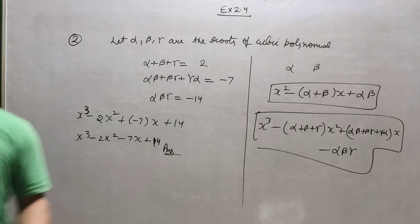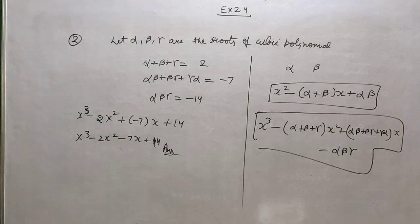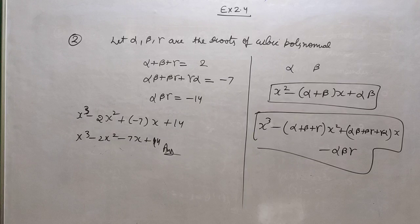So the answer is x cubed minus 2x squared minus 7x plus 14. This is similar to quadratic polynomial — you just have to remember there is one extra term which is alpha beta plus beta gamma plus gamma alpha.